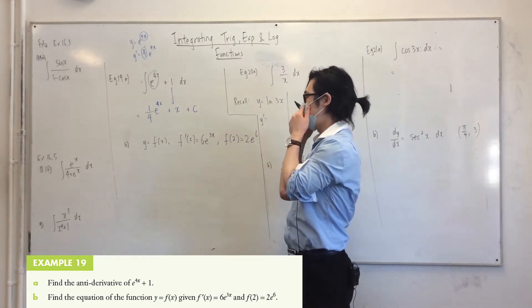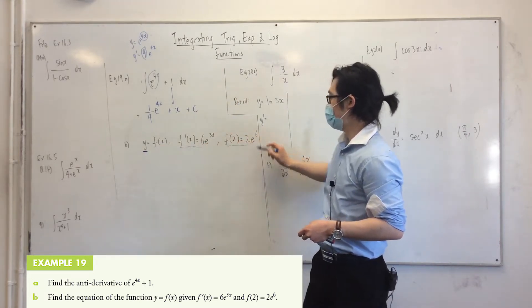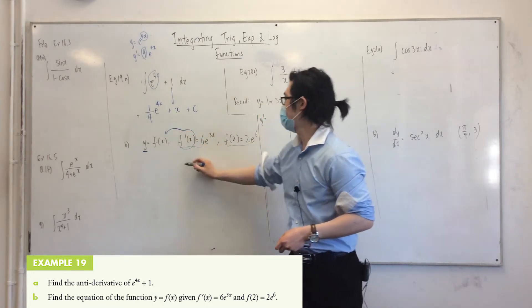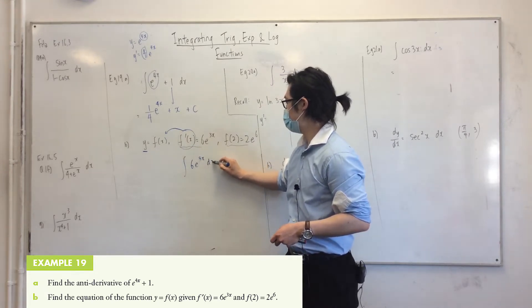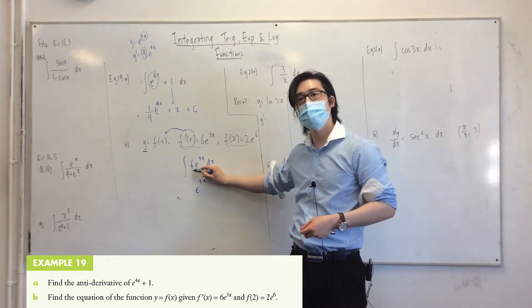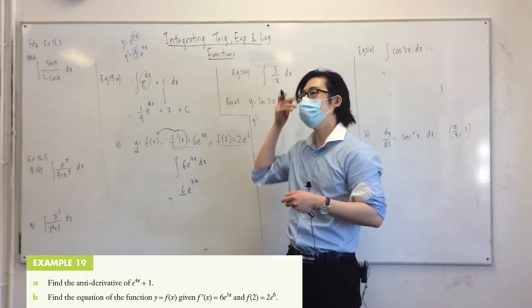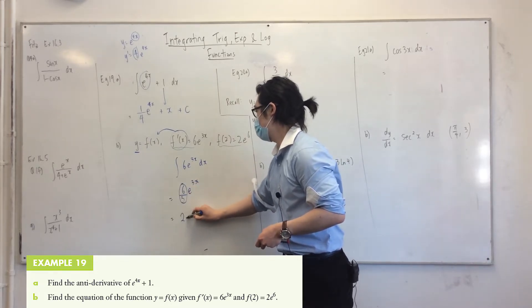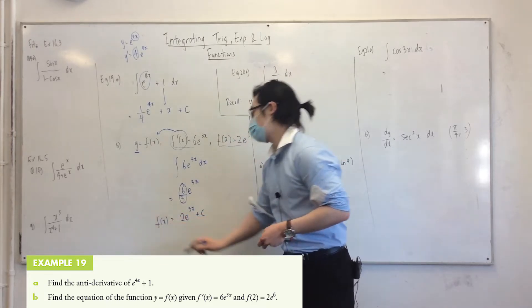So let's apply the same thing here for the next example. The question is basically, find y when you're given these two functions. So obviously, we want to integrate f'(x) in order to get to f(x). So that means I have to integrate this. Let's apply the same thing. So notice how there's a 6 this time. So put it there, but you always have to put it under the differentiation of the power, which is 3. That's right. And 6 over 3 is... yep. So right now, what I have is f(x) is equal to that.